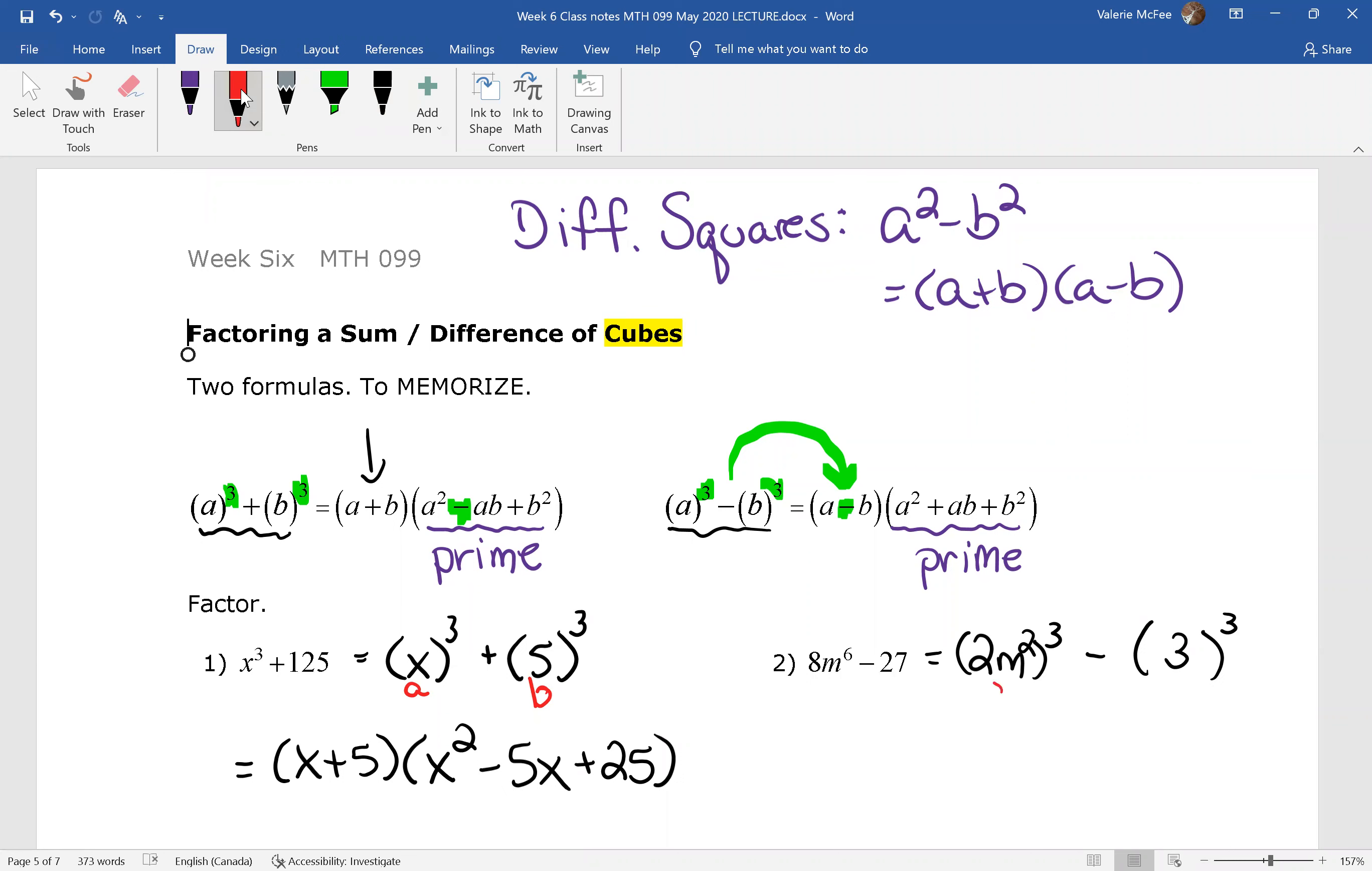Now we see that a is 2m² and b is 3, not negative 3, just the 3, whatever's inside that bracket being cubed. So our formula for a difference of cubes starts with a - b. So 2m² - 3.